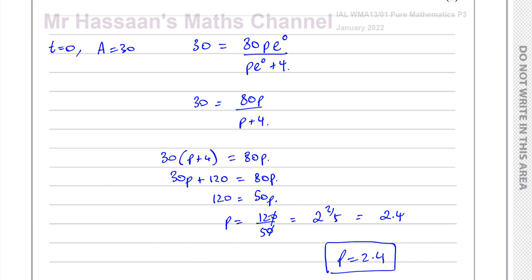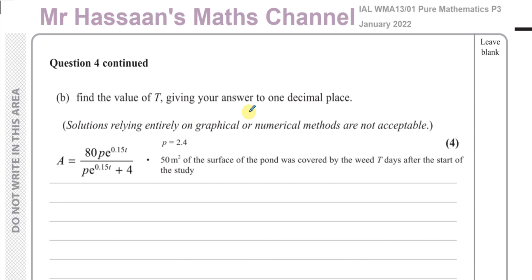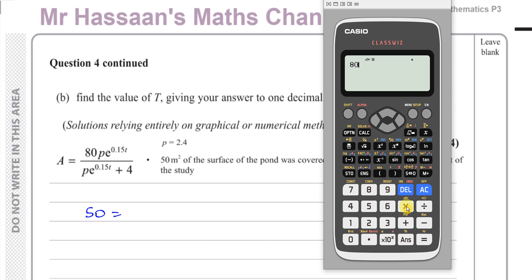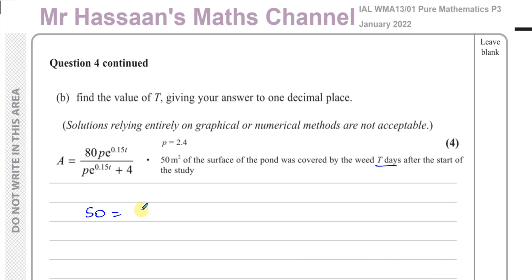Now moving on to part B: find the value of T, giving your answer to one decimal place. We know P equals 2.4, and after T days, 50 meters squared of the surface was covered. So we replace A with 50: 50 equals 80 times 2.4, which is 192, times e to the power of 0.15t, over 2.4·e to the power of 0.15t plus 4.